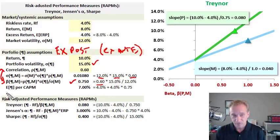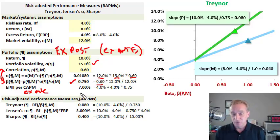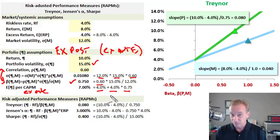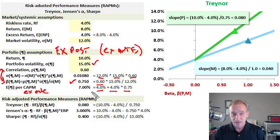Finally, CAPM tells us the expected return of the portfolio. CAPM is by definition an ex-ante model. It expects the portfolio performance to be 7%—not what we actually got—because CAPM expects alpha of zero. It tells us we expect the risk-free rate of 4% plus the equity risk premium of 4% multiplied by the portfolio's beta of 0.75. If expected return is a function only of systematic risk and all idiosyncratic risk is diversified away, we should get 7%. This is visualized in the blue security market line.